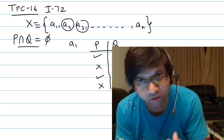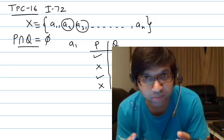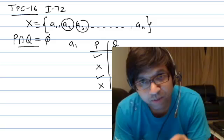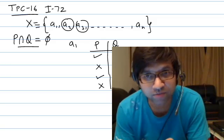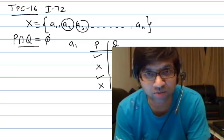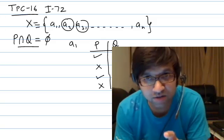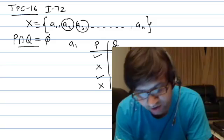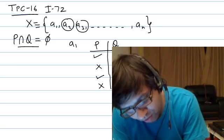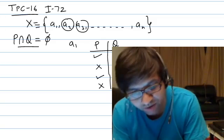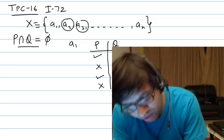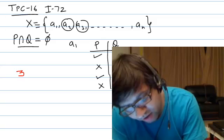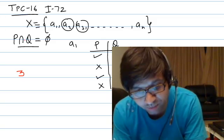We need to find the favorable options for element a1 so that P intersection Q is empty — so there is no common element in P and Q. If there is no common element, then a1 should not be present in both P and Q simultaneously. So the favorable options are: a1 in P not in Q, a1 in Q not in P, or a1 in neither — three favorable options. The option of a1 in both P and Q is not favorable.